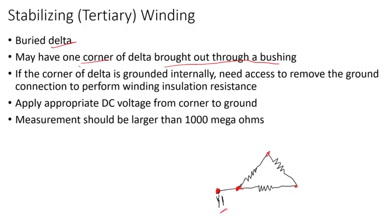If the corner of the delta is grounded internally, you need access to remove the ground connection. If you have a bushing, all you need to do is remove this jumper, conductor, or bus bar. Now you have the bushing isolated - the delta is not connected to ground anymore.